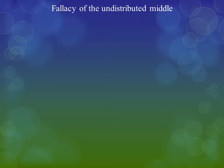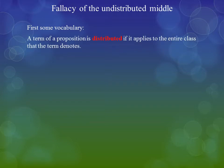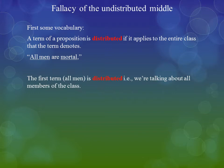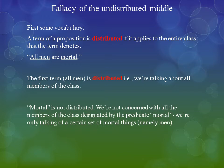The second fallacy is the fallacy of the undistributed middle. First, some vocabulary: a term of a proposition is distributed when it applies to the entire class that the term denotes. Take the proposition: All men are mortal. The term 'all men' is distributed — we are talking about all members of the class of humanity. But 'mortal' is not distributed. We are not concerned with all the members of the class designated by the predicate 'mortal' — we are only talking of a certain set of mortal things, namely men — leaving out animals, plants, and so on.